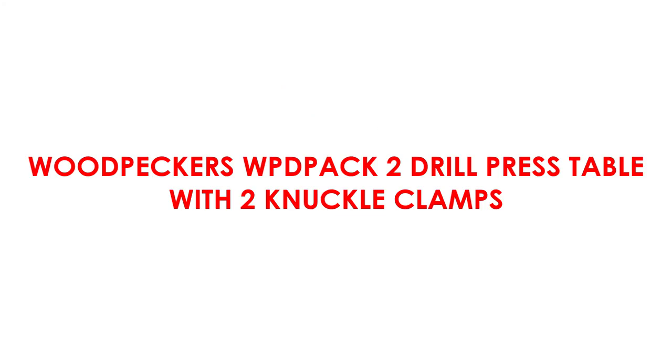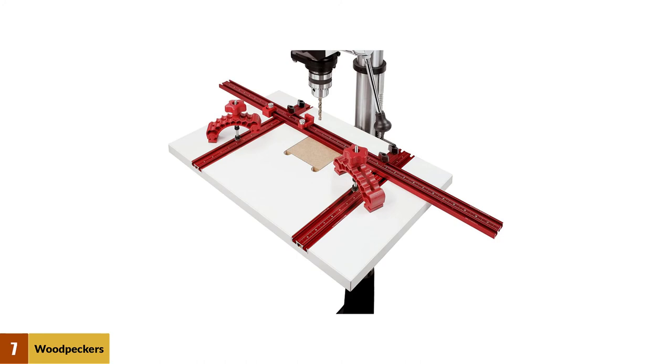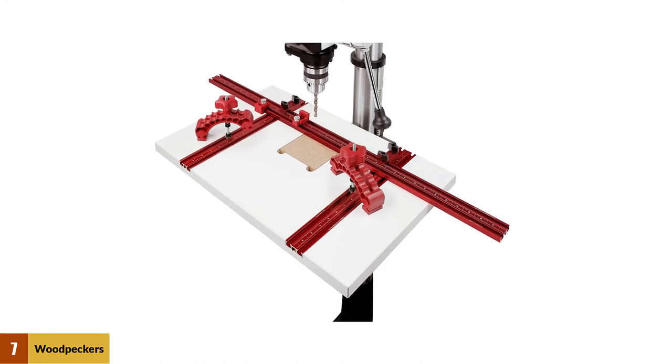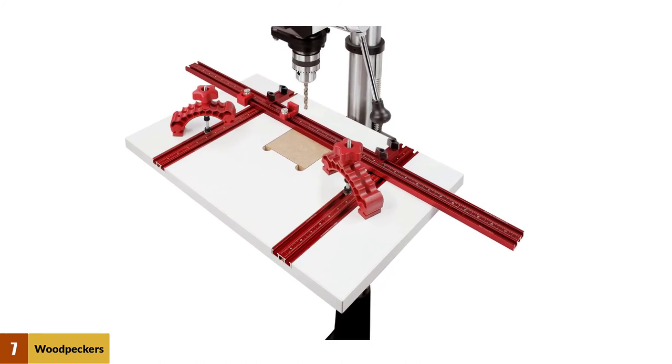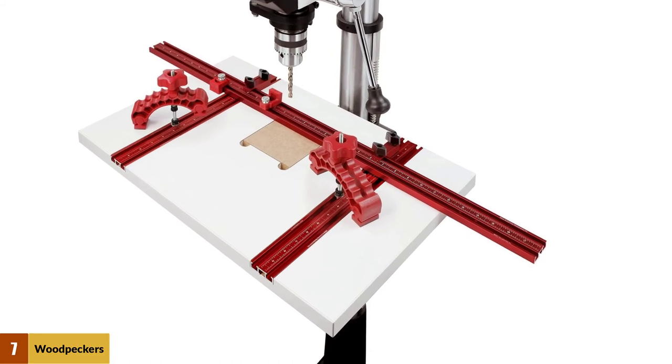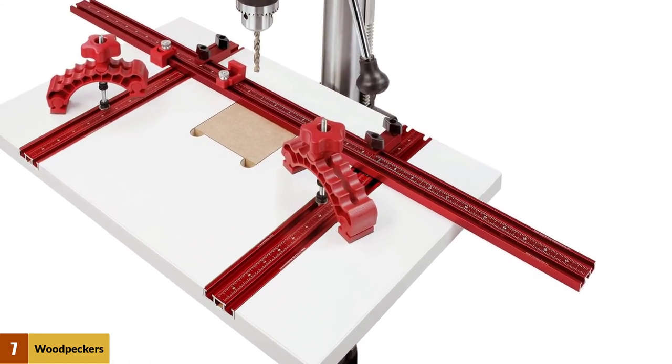At number 7, Woodpeckers will pack two drill press table with two knuckle clamps. The Woodpeckers will pack table is the best overall choice for someone looking for a great drill press table. It comes with a large 16 by 23-inch work table that gives you plenty of space to work with very large pieces.